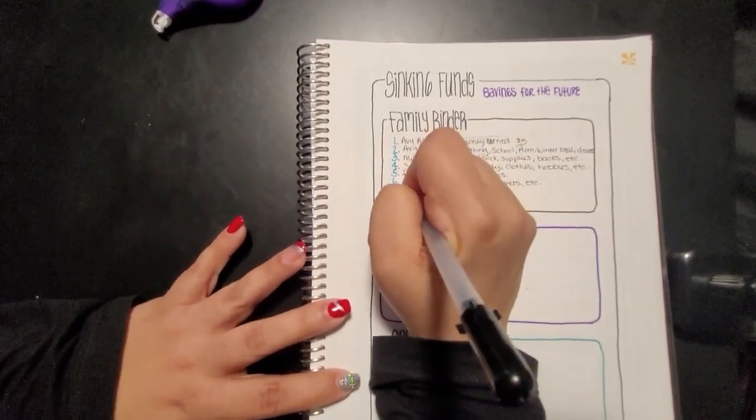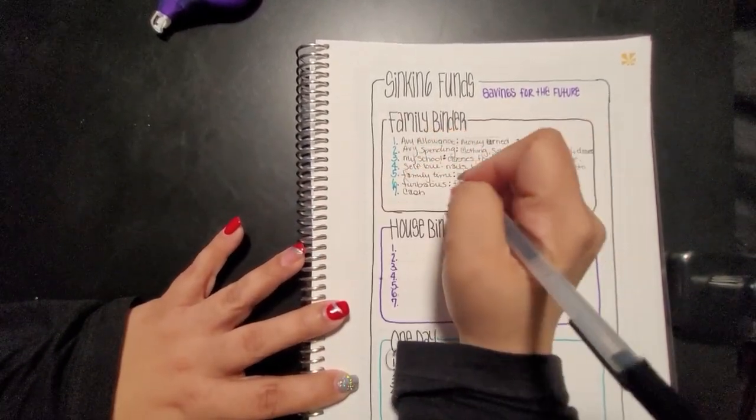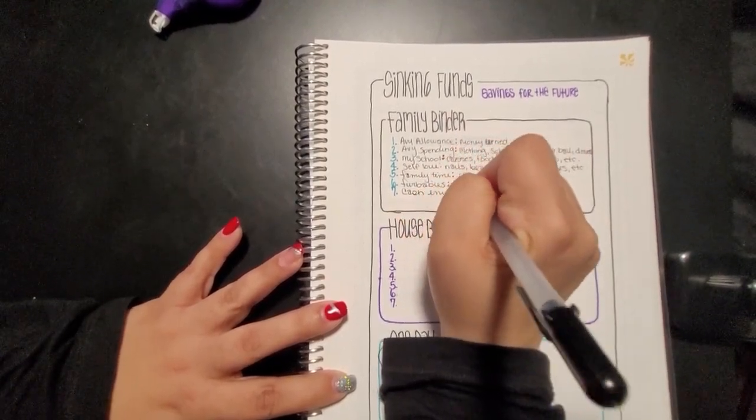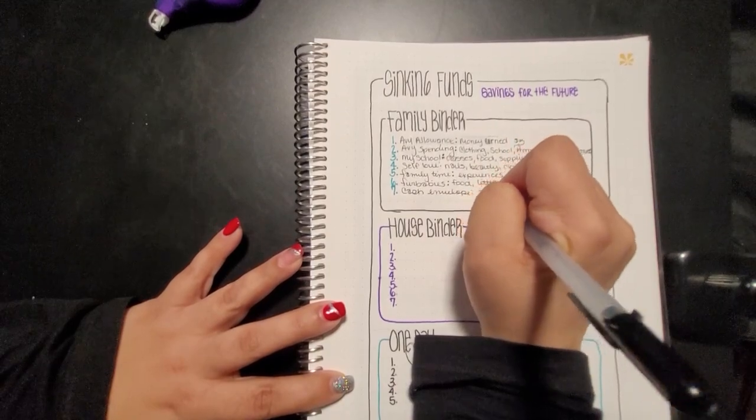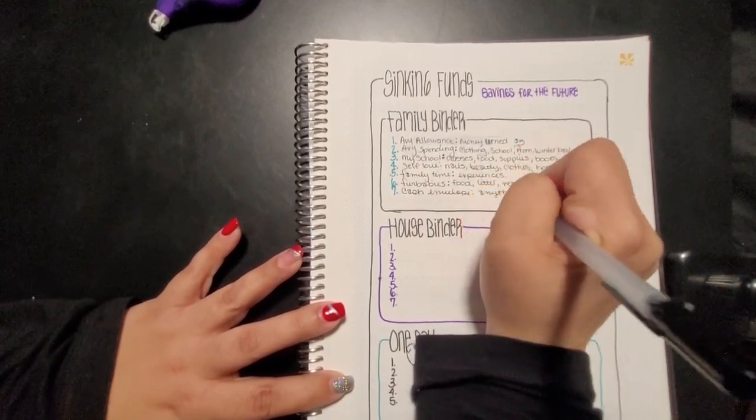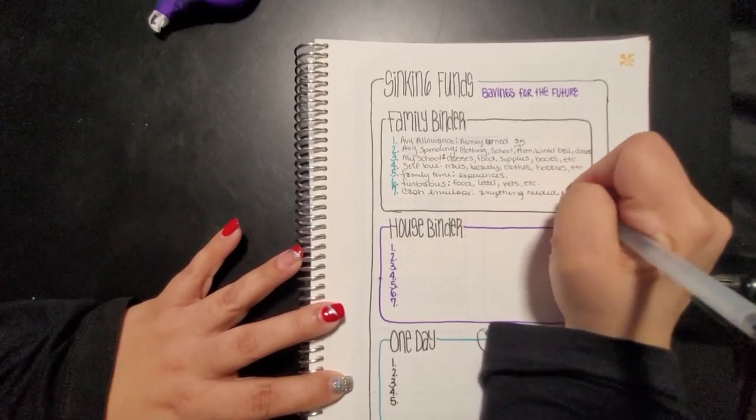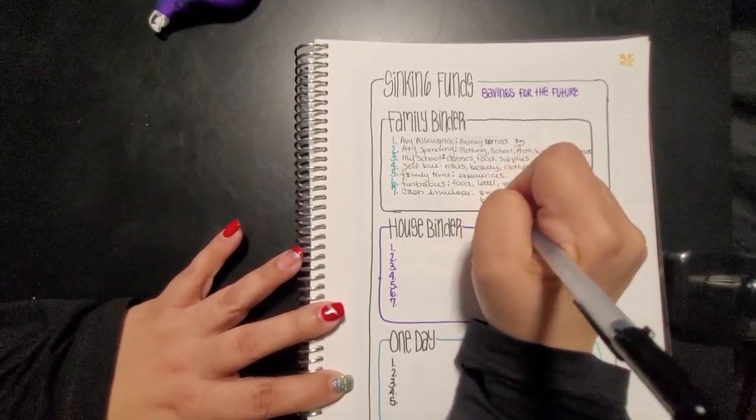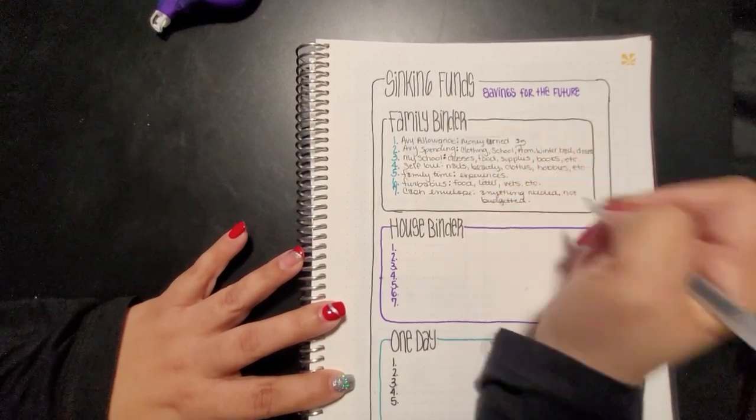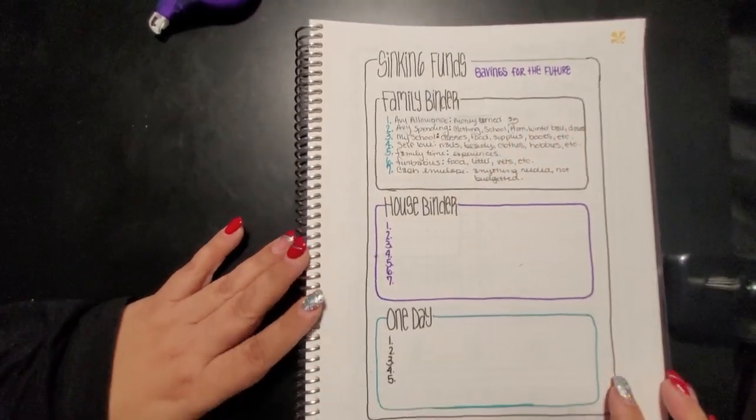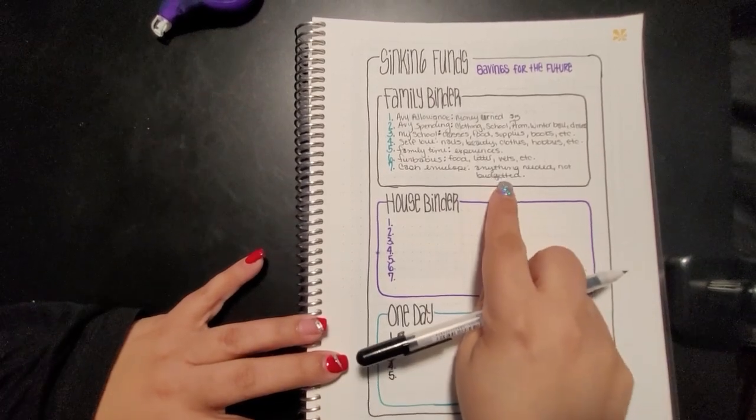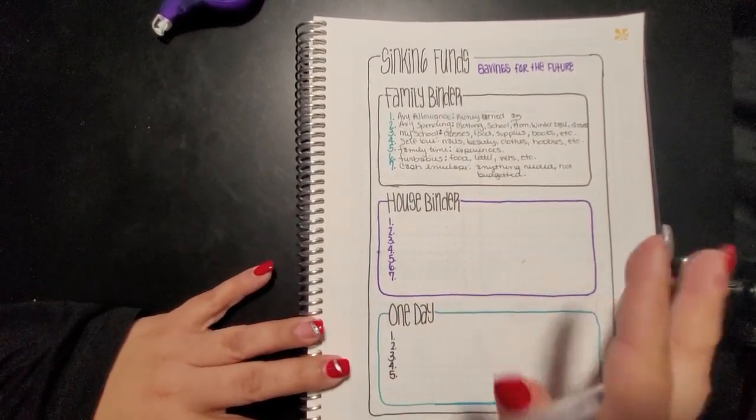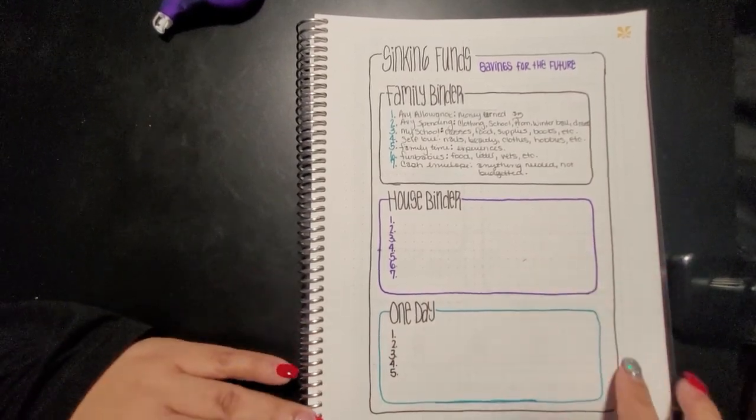And then the other one is just a cash envelope which is for anything needed, not budgeted. I still haven't figured out if you spell budgeted with two T's or with one, but we're just going to go with it because who cares.